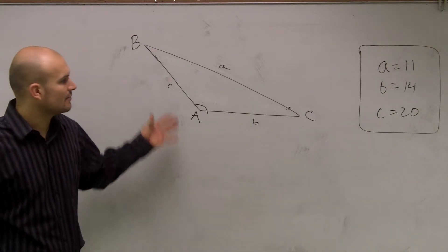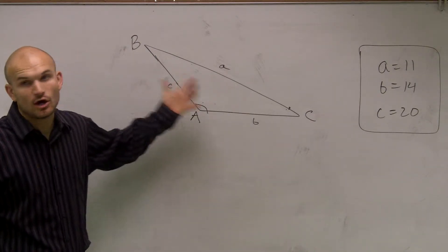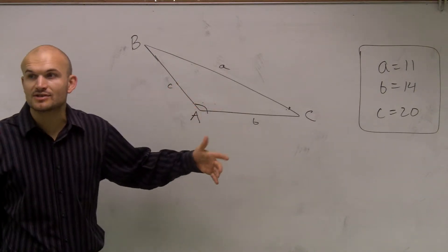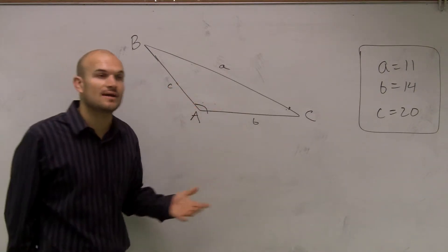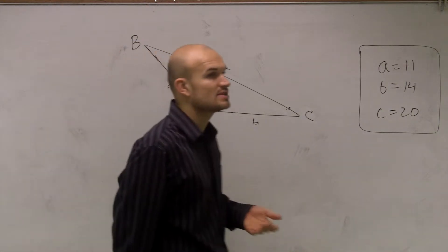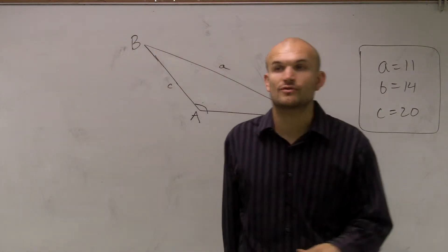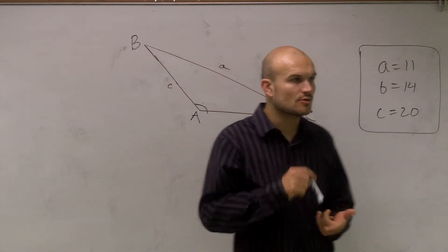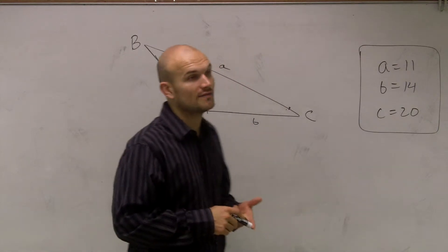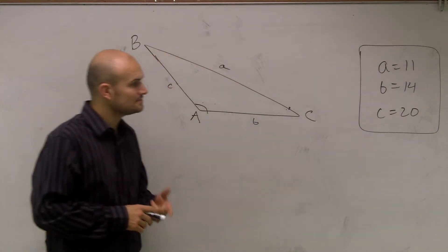One thing we want to work on — since we have all three side lengths, we cannot use the law of sines. We're not going to be able to create that ratio. So we're going to have to use the law of cosines.